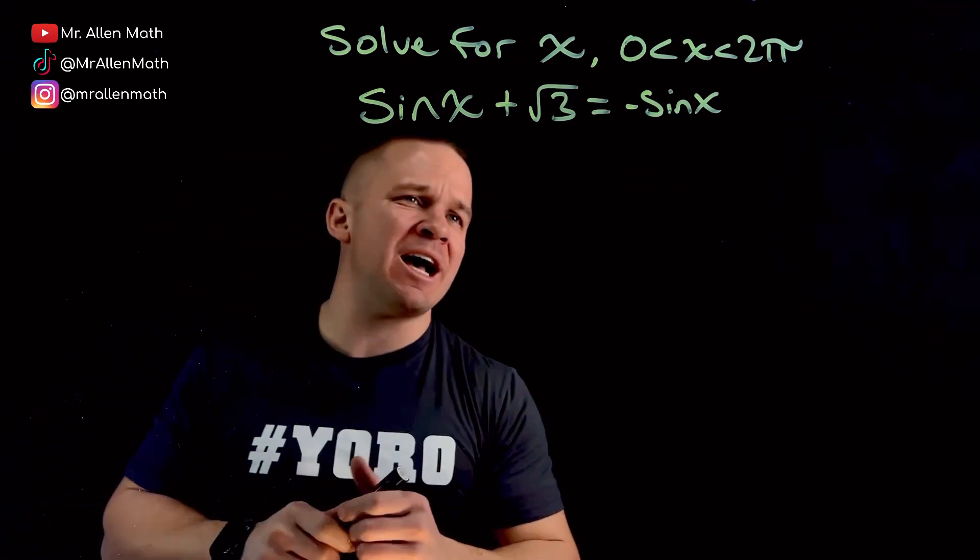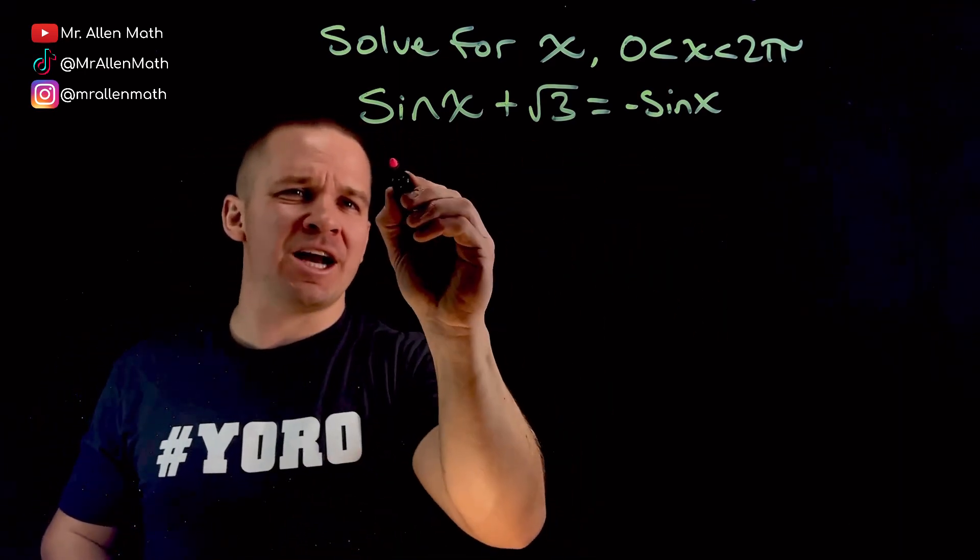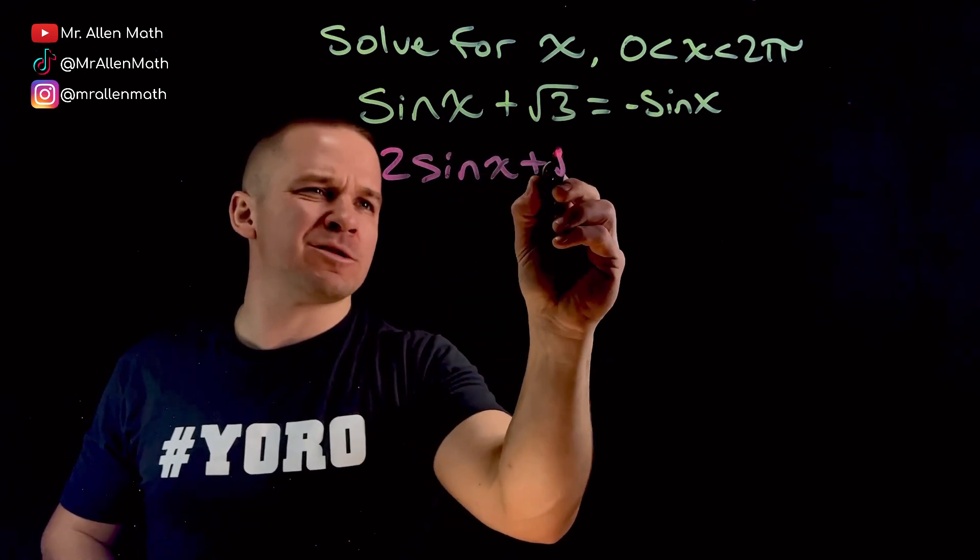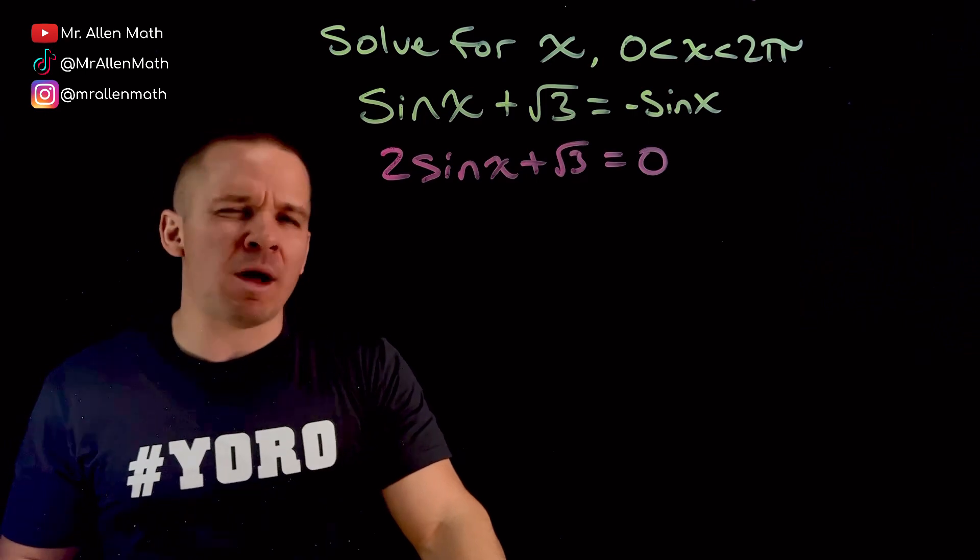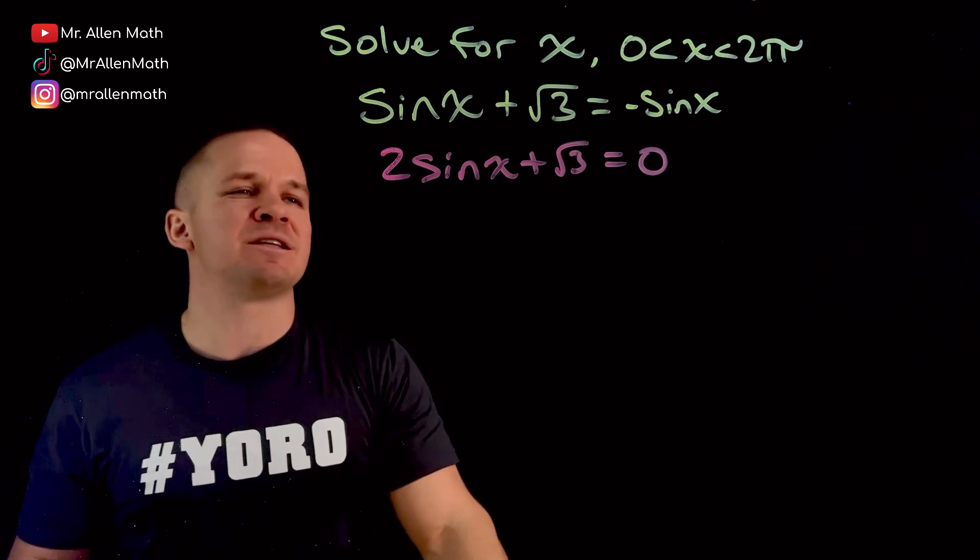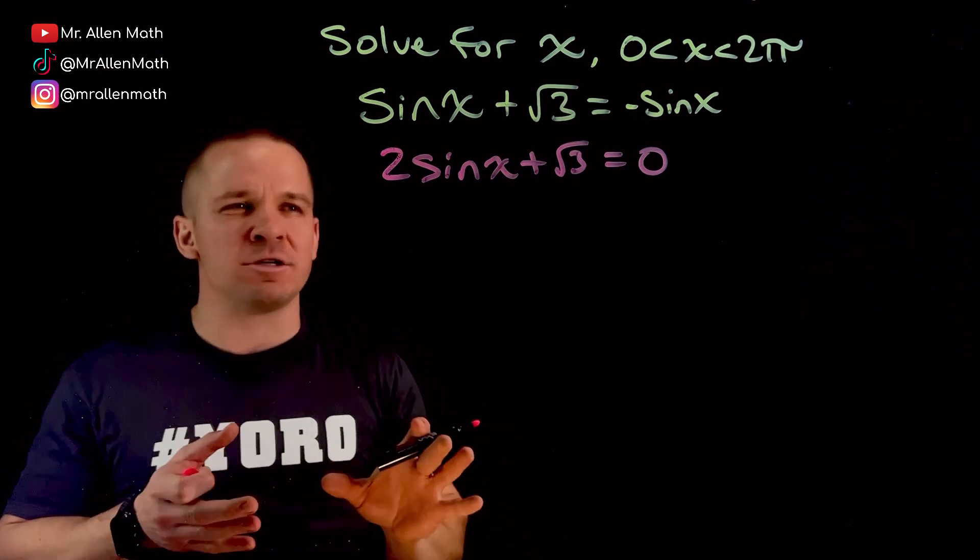How about I add that sine x over to the other side here, which would give me 2 sine x plus root 3 equals 0. Now what? Well, I'm thinking I want to get sine of x by itself. This isn't going to be like a factoring type problem or anything like that.